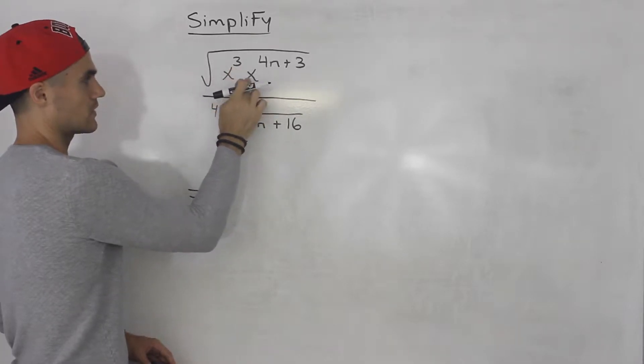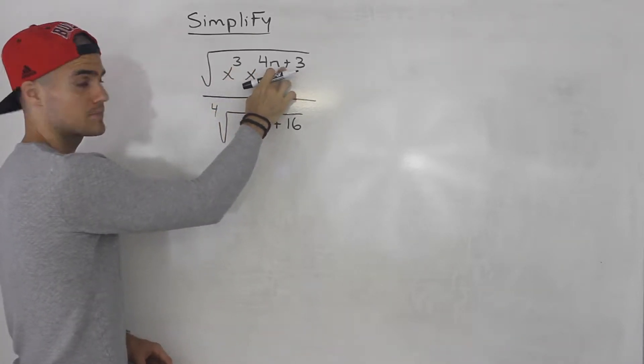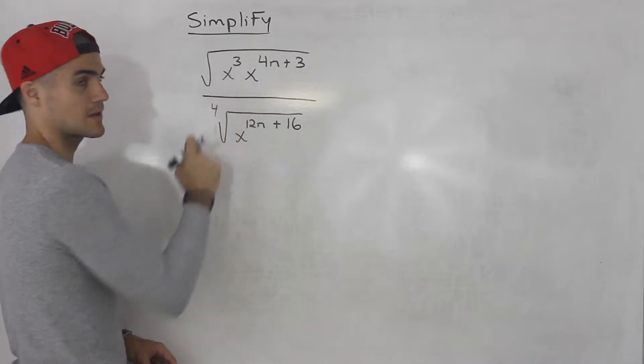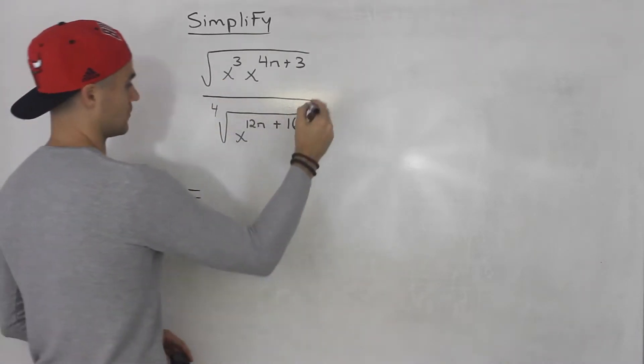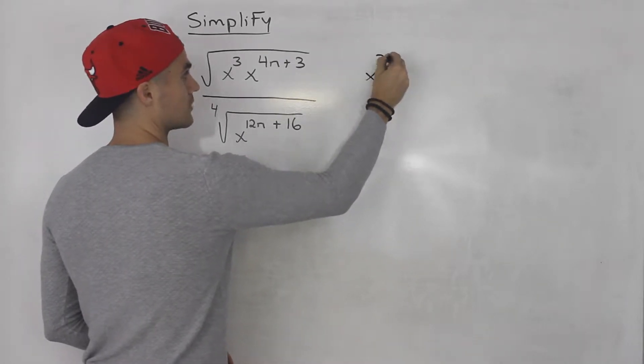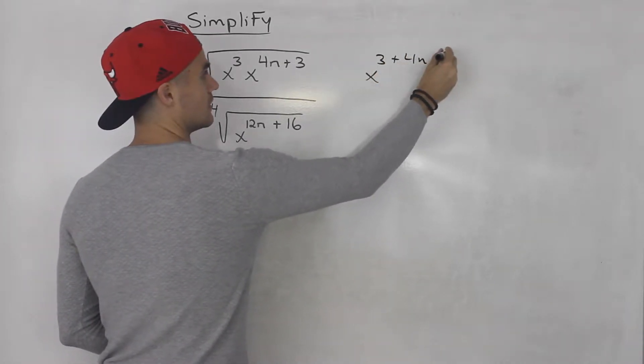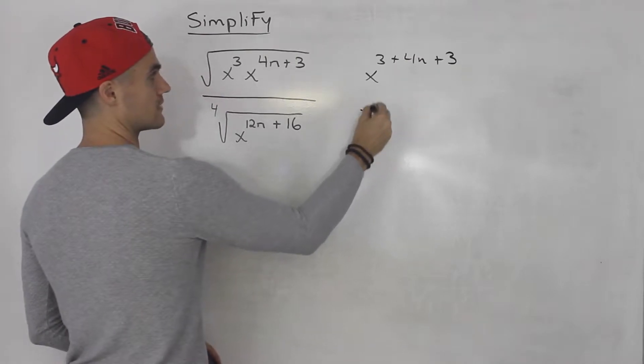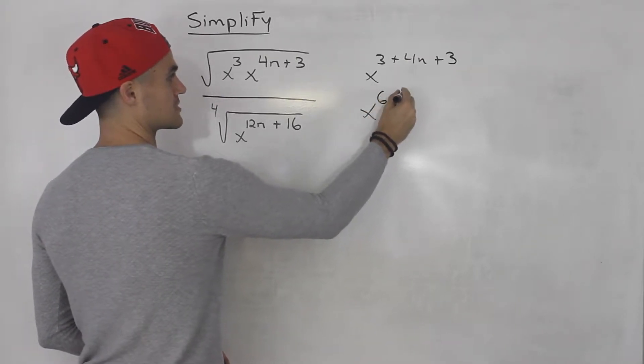Notice that we have x to the power 3 times x to the power 4n plus 3. When multiplying exponents with the same base, you can add the exponents. So this would end up being x to the 3 plus 4n plus 3. And what does that simplify to? That simplifies to 6 plus 4n.